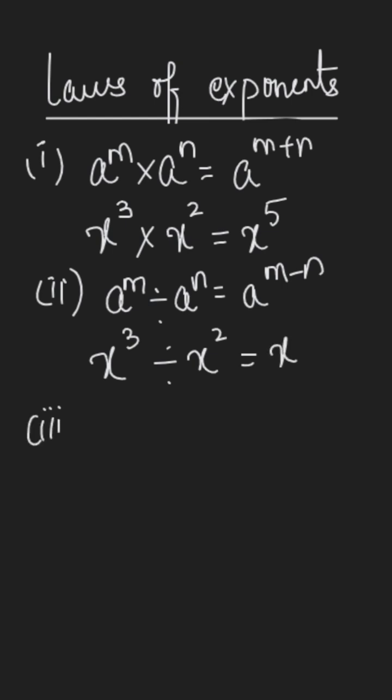Then you have the power rule which says a power m whole power n equals a power m n. If you have x power 5 whole power 6, this will be equal to x power 30.